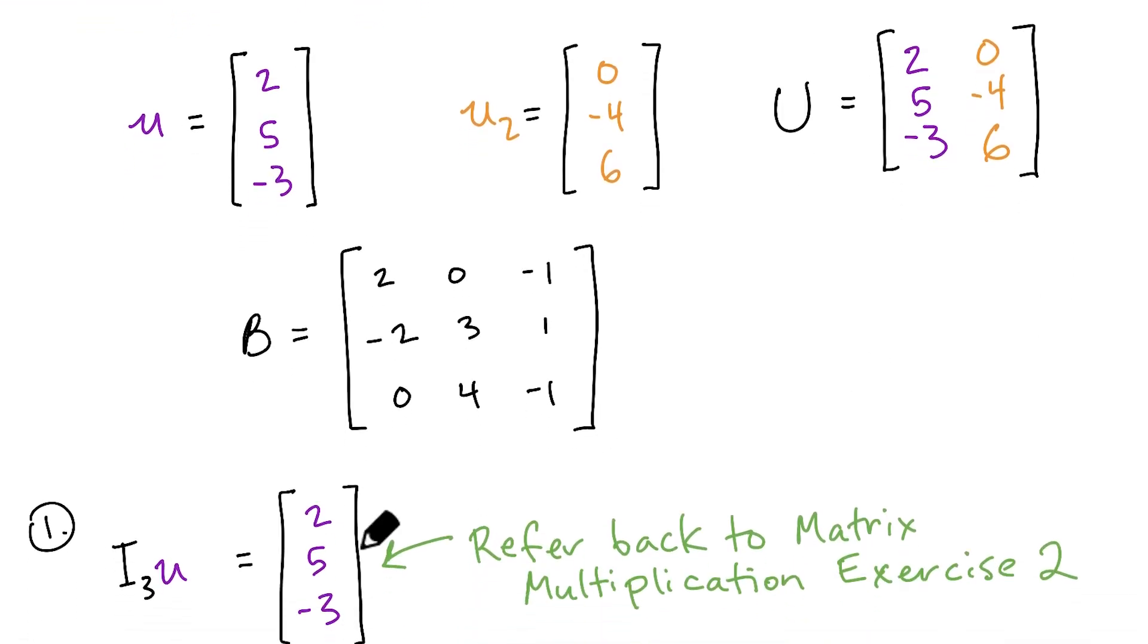All right, so for our first exercise, we were applying the identity matrix I3 to the vector u, and this should actually be pretty easy at this point. If you're not able to figure out why applying the identity matrix I3 to the vector u results in getting this same u back, you should know that at this point to be able to move forward. I definitely recommend referring back to the matrix multiplication exercise 2 from earlier on in this machine learning foundation series in the first subject, Intro to Linear Algebra.